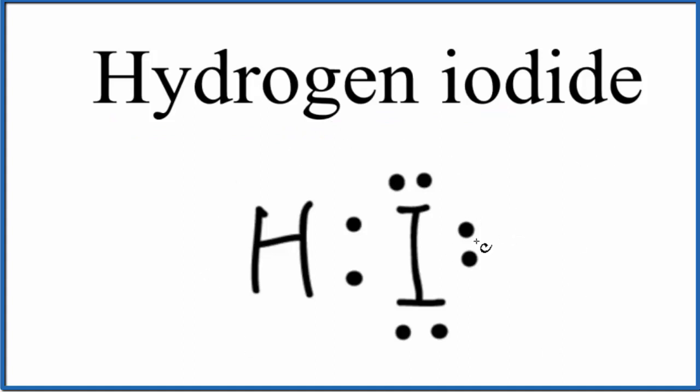So we start with the Lewis structure here, and you can see that a pair of electrons is shared between the hydrogen and the iodine atom. So that's our chemical bond there, our covalent bond.